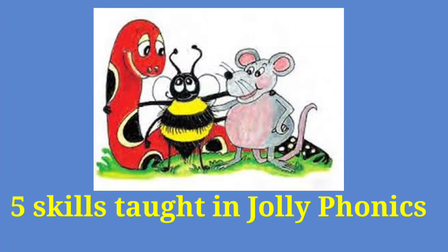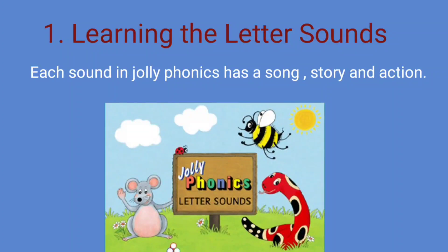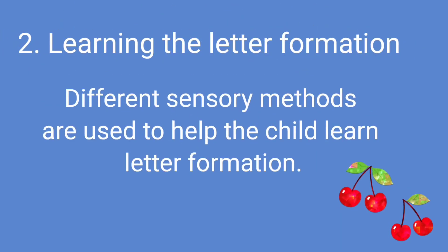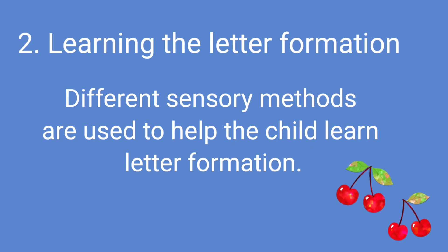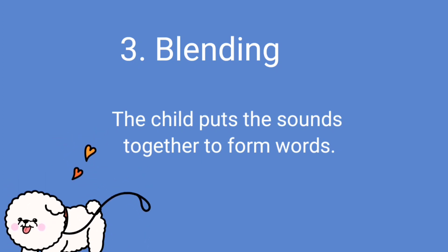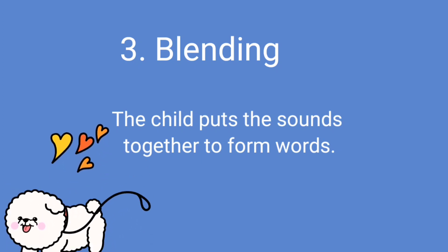There are five skills taught in Jolly Phonics, and each skill is very important. The first skill is learning the letter sounds — each sound has a story, a song, and an action. The second skill is letter formation, in which children use different sensory methods like songs and actions to learn how to form and write different letters.